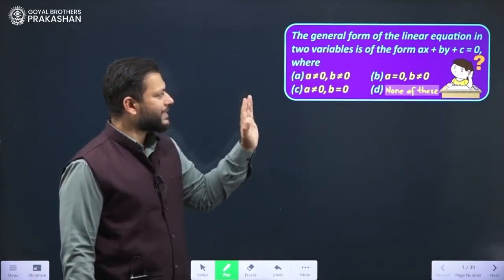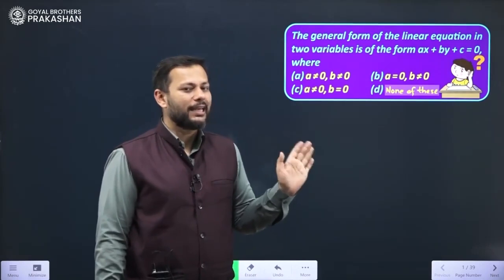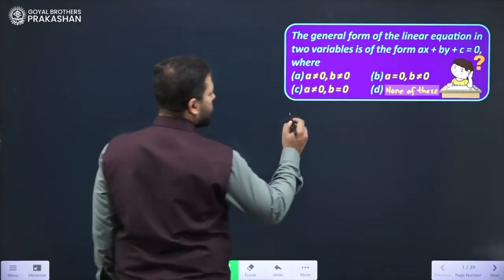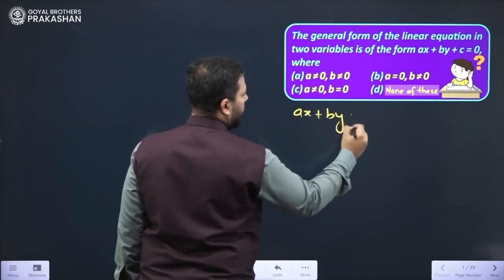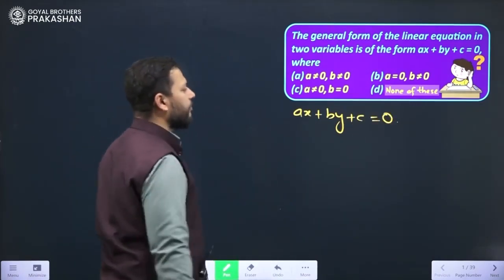So if we first analyze this, we know what is the general form of the linear equation in two variables. It is given to us already. It has to be ax plus by plus c equals to 0. Here we need to define a few things.